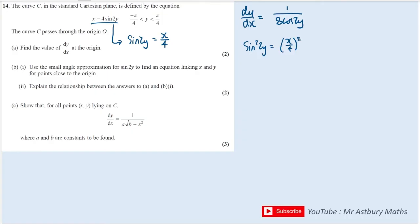I can then replace sine squared 2y with 1 minus cos squared 2y. I can then make cos squared 2y the subject. It's going to give me 1 minus x over 4 squared.